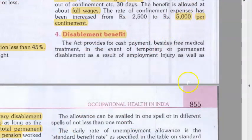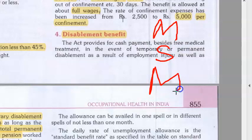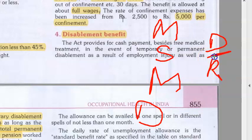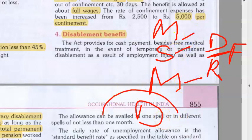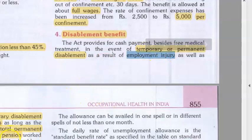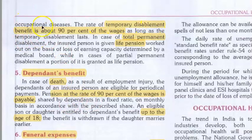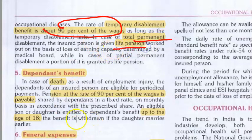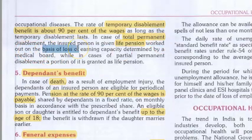We finished medical, sickness, and maternity benefit. Now moving to disablement benefit. In case of temporary or permanent disablement as a result of employment injury or occupational disease: temporary disablement benefit is 90% of wages for the duration of temporary disablement. Permanent disablement means life pension, calculated on the basis of loss of earning capacity.